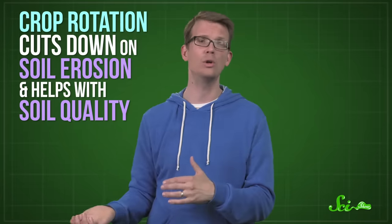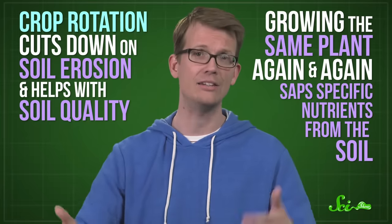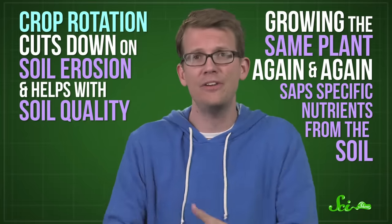Crop rotation cuts down on soil erosion and helps with soil quality, too. That's because growing the same plant again and again saps specific nutrients from the soil. But if you rotate plants with slightly different chemical needs, no one nutrient runs especially low. Rotation also reduces the need for pesticides, because no pest can get especially comfy.